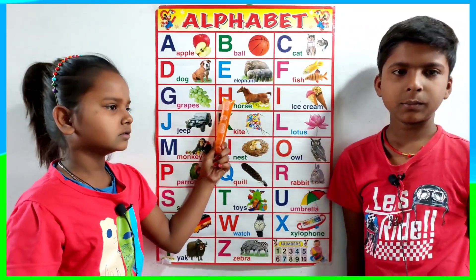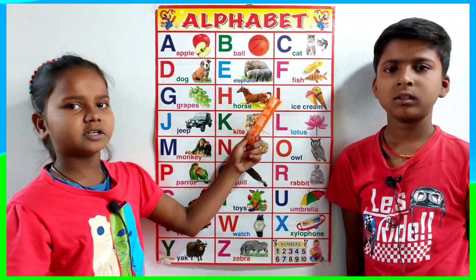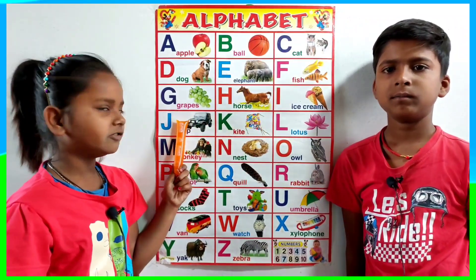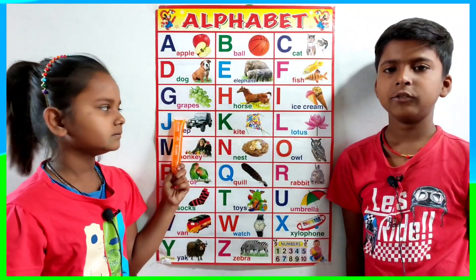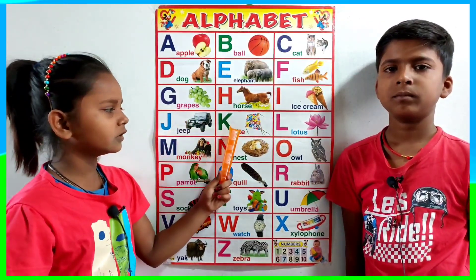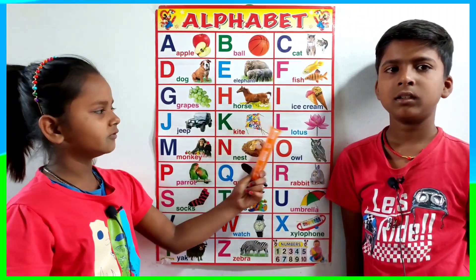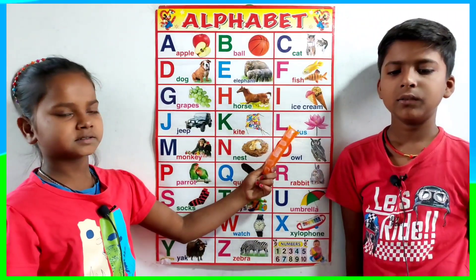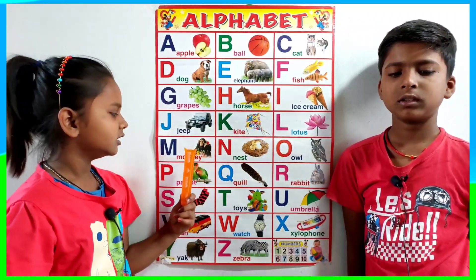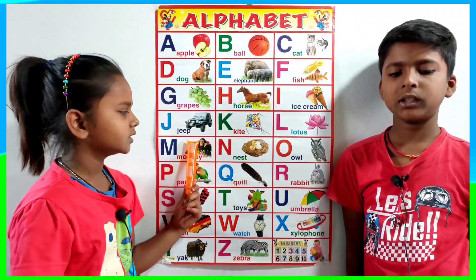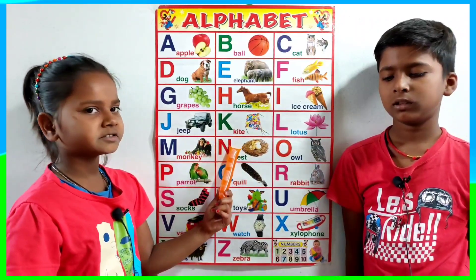H for horse, I for ice cream, J for jeep, K for kite, L for lotus, M for monkey, N for nest.